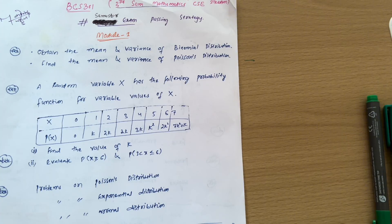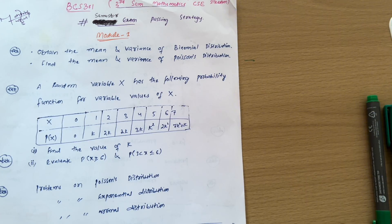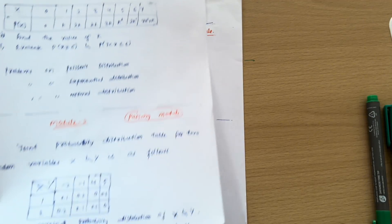Mathematics is not a subject that can be studied only in one night and you will just pass — this is not a one-night show. Maybe somebody has the potential to pass mathematics in one night, but that is very rare. On average, most students are struggling with the mathematics subject, and it is the right time to start your preparation. Your examinations are very near — around 16 to 17 days are left.